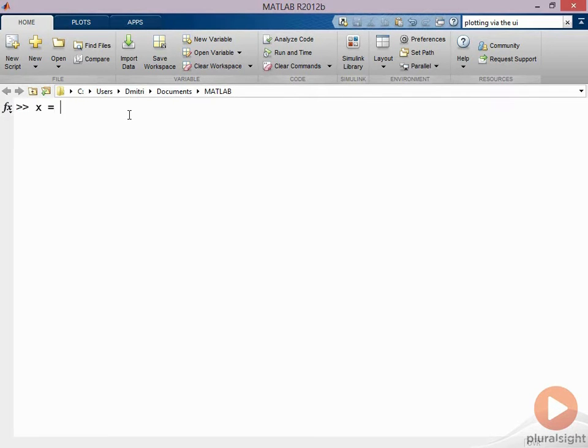I'm going to define x as linearly spaced numbers between minus 10 and 10 with 101 points. Then I'm going to define y as x cubed. Notice the use of the dot to do element-wise power. So I've got my x and y.